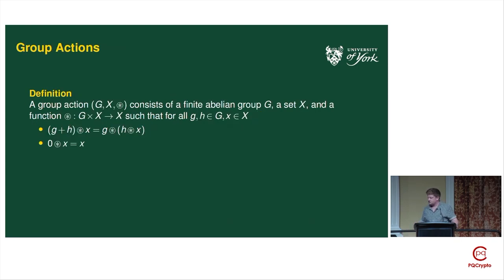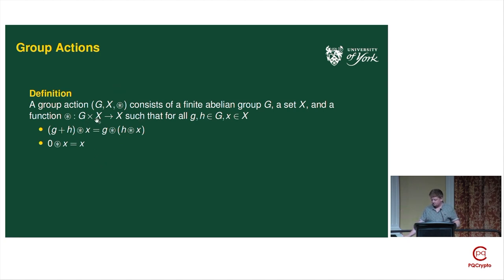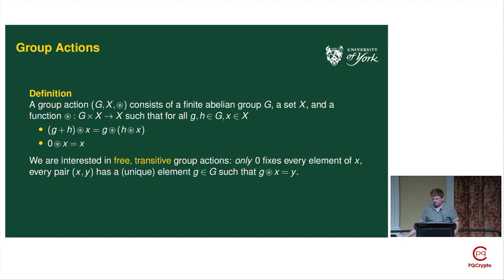Let's talk about what a group action is. I'm writing my groups additively because they always have to be abelian, so the group operation is plus, the identity is zero. A group action is a finite abelian group, a finite set, and a function star that lets us move around the set using group elements. It has to play nicely with the group operation and be fixed by the identity. We also require it to be free and transitive, which means for every pair x, y there's a unique group element g such that g acting on x gives you y.